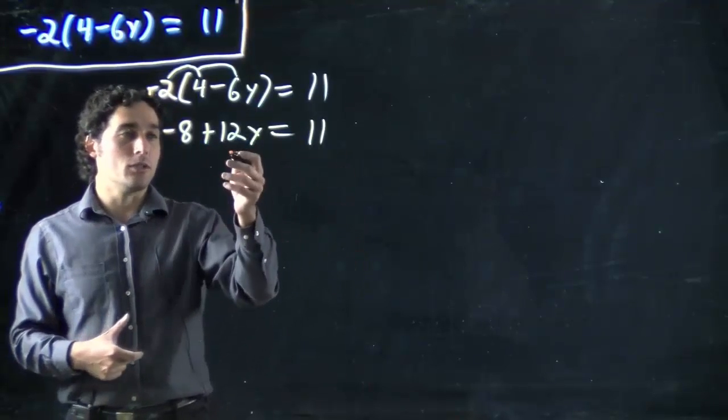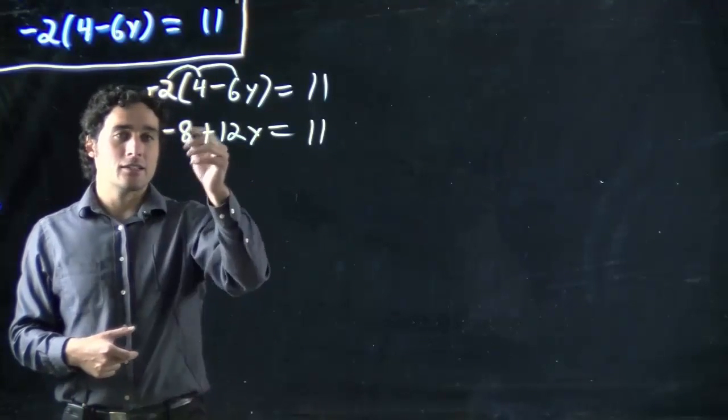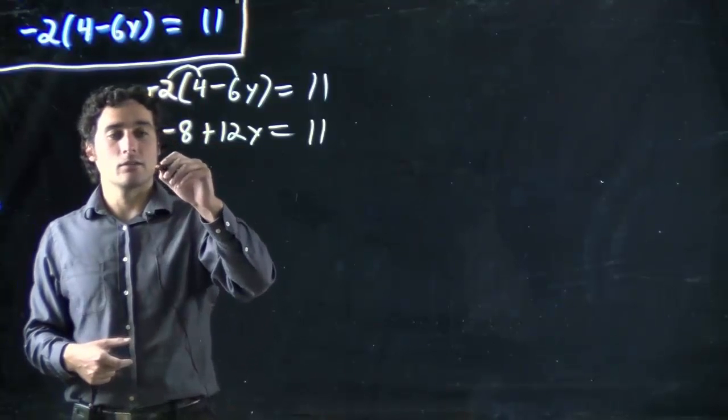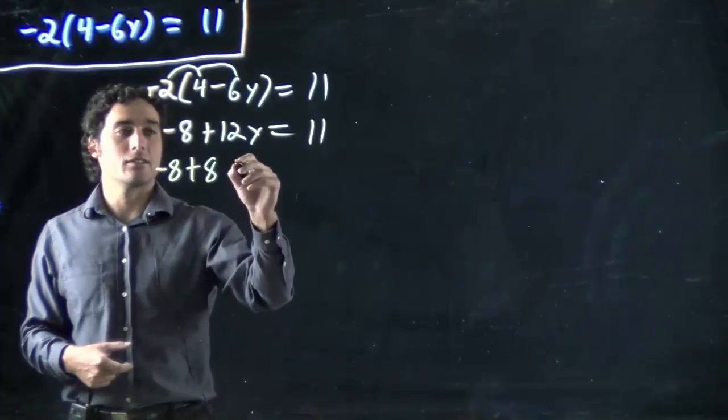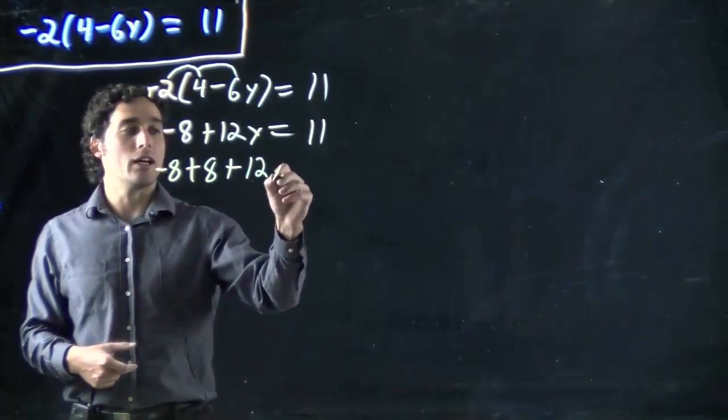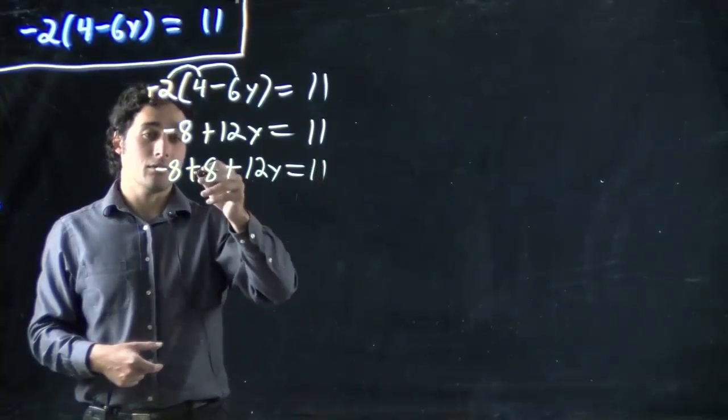And then we're back to doing our usual trying to solve for y. So I'll have to get rid of this 8. Well, minus 8. What do I have to do? The opposite. Plus 8. So we've got the plus 12y equals 11 plus 8.